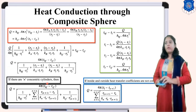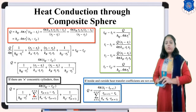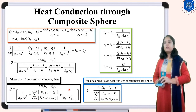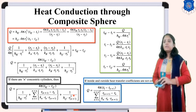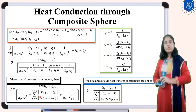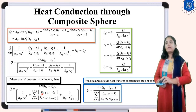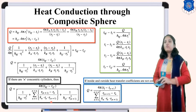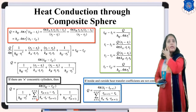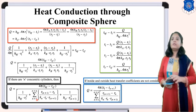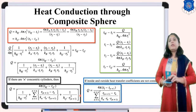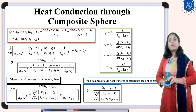When N layers are present, the general equation becomes Q equals 4π·(T1 minus T_{N+1}) divided by the summation from N=1 to N of (R_{N+1} minus R_N)/(K_N·R_N·R_{N+1}), where convection terms inside and outside are neglected. The two convection terms at the boundaries are fixed, and the N layers give the conduction resistance sum.